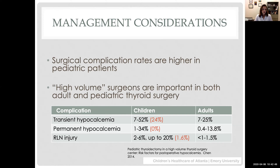In adult literature, the high-volume cutoff is somewhere around 25–30 surgeries a year. There's just not that much thyroid cancer in kids, and active research is underway to determine where the high-volume mark should be set and whether other surgical experience in the neck would contribute to that volume number. In the meantime, most places with an active thyroid center are trying to consolidate those surgeries among a few surgeons to keep skills fresh and practice numbers up.